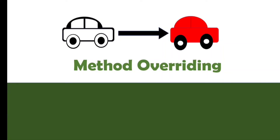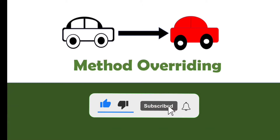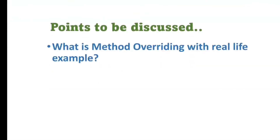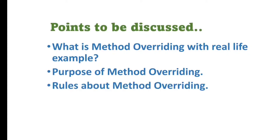In the last tutorial we discussed about method overloading. In this tutorial we are going to discuss about method overriding. To understand method overriding you need to know the concept of inheritance, which I have already explained in a previous tutorial — the link is in the description. We will cover: what is method overriding, its purpose, rules for method overriding, and a simple example.